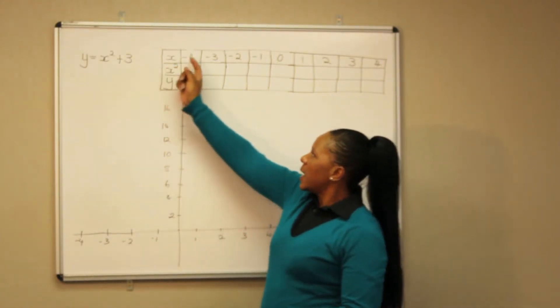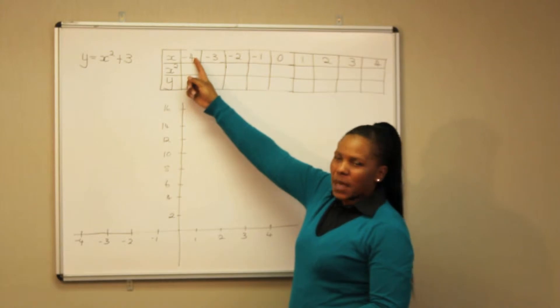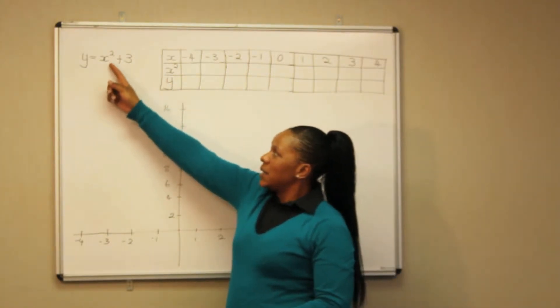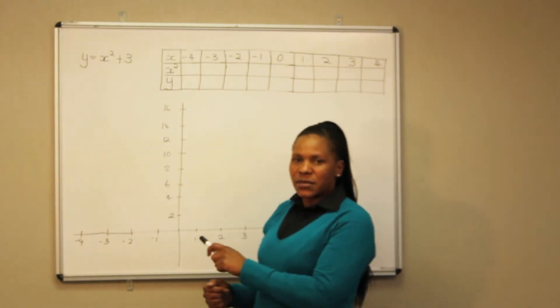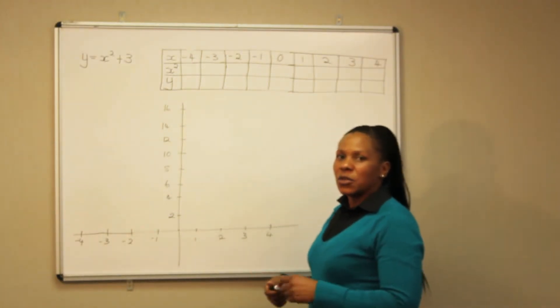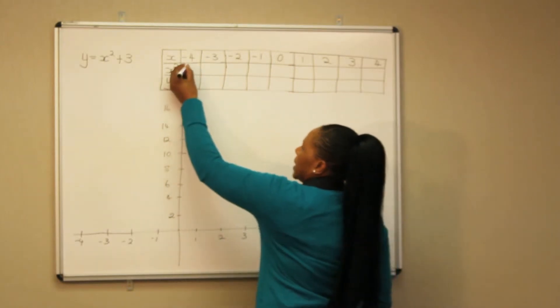The value of x in this case is minus 4. So minus 4 squared we are going to get 16, because minus 4 times minus 4, two negatives are going to give us a positive. So we get 16.